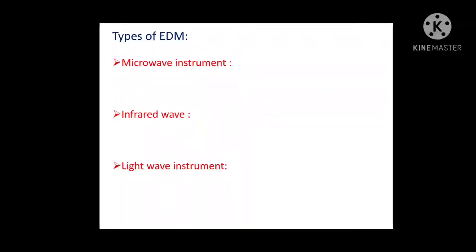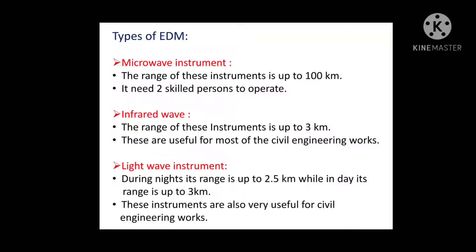The microwave instrument has a range of up to 100 kilometers. It consists of two identical units — one used as a master unit and the other as a remote unit. By pressing a button, a master unit can be converted into a remote unit and vice versa. It needs two skilled persons to operate, and a speech facility is provided to each operator to interact during measurements.